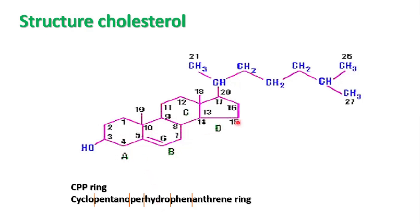The steroid nucleus of cholesterol has four rings: A, B, C, and D, and it is a 27-carbon molecule. Between the 5th and 6th carbon there is a double bond. On the 10th and 13th carbon there is a methyl group attached. On the D ring at the 17th carbon there is an 8-carbon isoprenoid chain. On the third carbon there is an OH group.